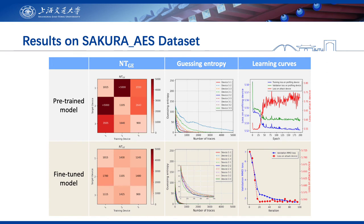Unlike the above datasets, the Secura dataset provides measurements of an unprotected hardware implementation of AES on FPGA. Since the signal-to-noise ratio is relatively small, our pre-trained models require around 1,000 traces to successfully recover the key of the same device. When we apply the pre-trained models to other devices, the required number of traces is likely to double. We observe that all cross-device experiments improve after applying our method, and fine-tuned models achieve performance similar to the single-device attack. Therefore, our approach is also suitable and efficient for hardware implementations.